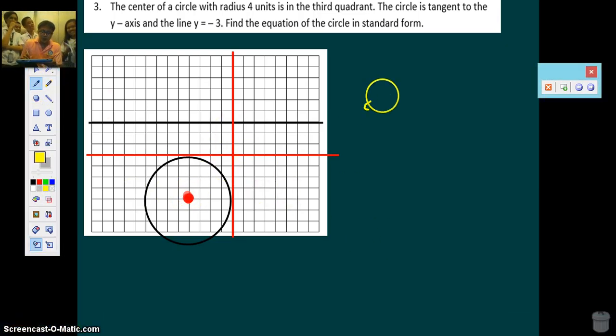So what are the coordinates? If it's tangent to the y-axis, the center must be negative, that's the radius 4. So negative 4. Distance from the y-axis is 4. Down from the line negative 3, that's 4. So the center must be negative 7.